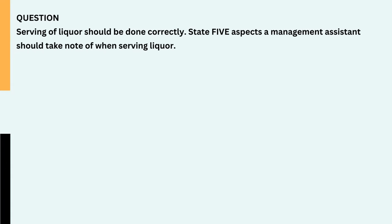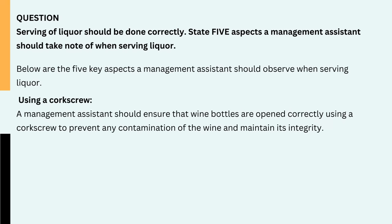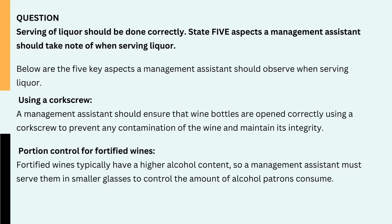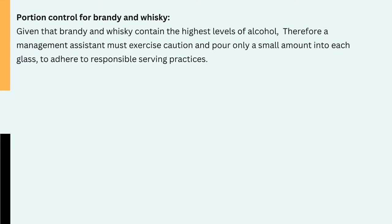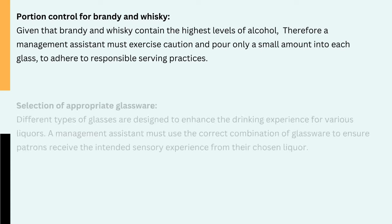Question: Serving of liquor should be done correctly. State five aspects a management assistant should take note of when serving liquor. 1. Using a corkscrew. A management assistant should ensure that wine bottles are opened correctly using a corkscrew to prevent any contamination of the wine and maintain its integrity. 2. Portion control for fortified wines. Fortified wines typically have a higher alcohol content, so a management assistant must serve them in smaller glasses to control the amount of alcohol patrons consume. 3. Portion control for brandy and whiskey. Given that brandy and whiskey contain the highest levels of alcohol, a management assistant must exercise caution and pour only a small amount into each glass to adhere to responsible serving practices.